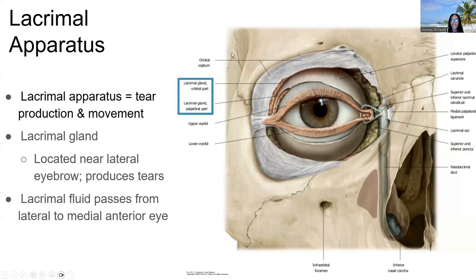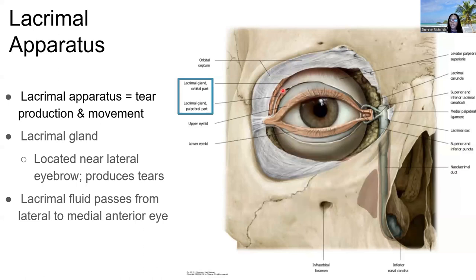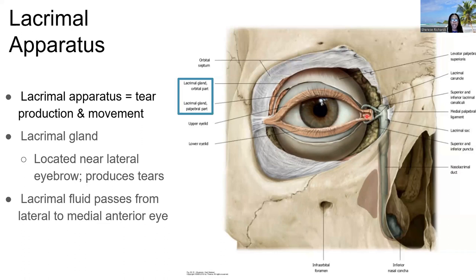The lacrimal apparatus starts with the lacrimal gland, located in the upper outer quadrant of the eye. It has two portions: the orbital part above the levator palpebrae superioris muscle, and a deeper palpebral part beneath that muscle. Both components produce tears — secretions that wash onto the surface of the sclera and the anterior aspect of the eye, then move towards the inner eye.